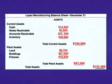Now let's enter the plant assets: land $8,750, buildings $21,930, and fixtures of $16,820. We total those assets to get $47,500. And then we add current assets to plant assets to get total assets of $152,400.